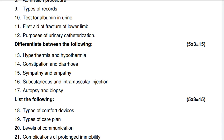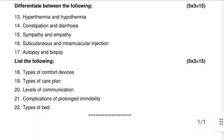Differentiate between: hyperthermia and hypothermia — 15 marks; constipation and diarrhea; sympathy and empathy; subcutaneous and intramuscular injections; autopsy and biopsy. Next question — 15 marks.